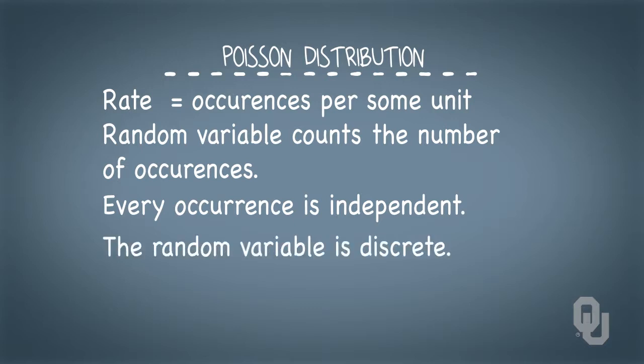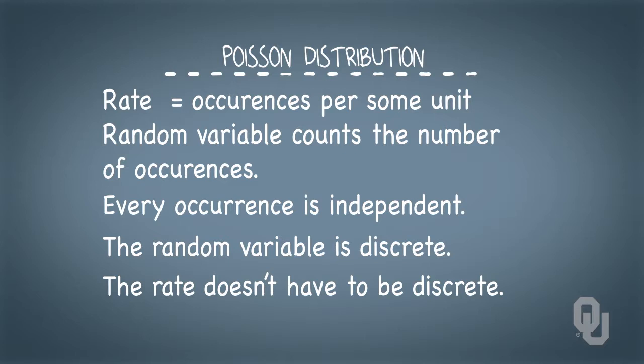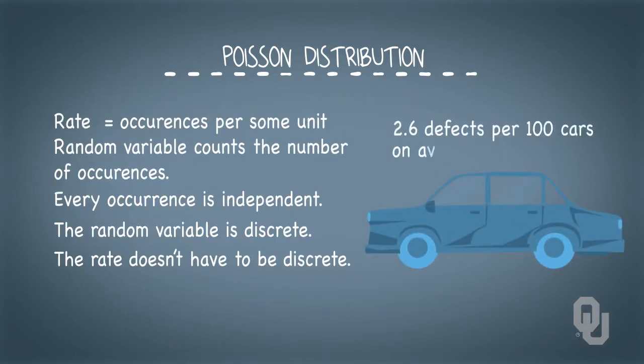Also, the random variable must be discrete, as we're counting the number of times we witness an occurrence of something. But the rate need not be discrete, as the rate is an average. That is, we could see 2.6 defects per 100 cars on average.